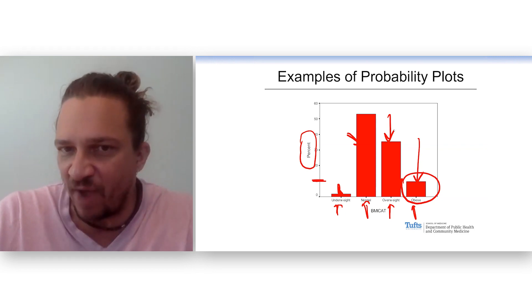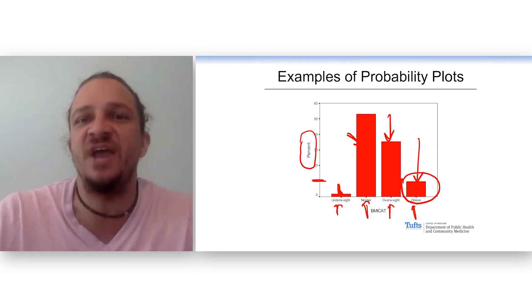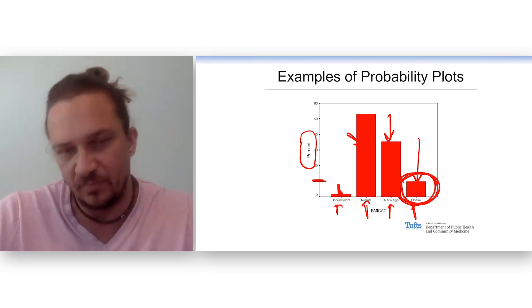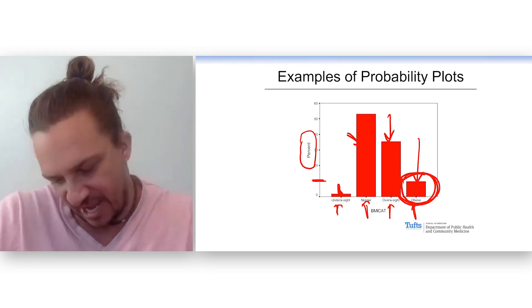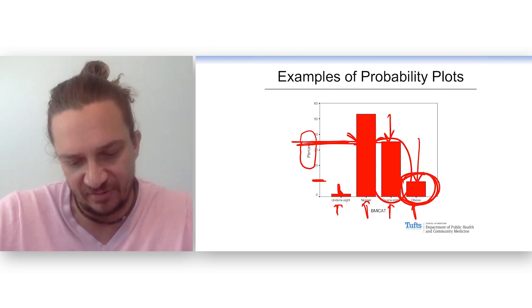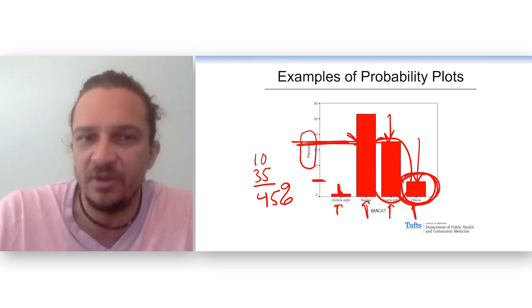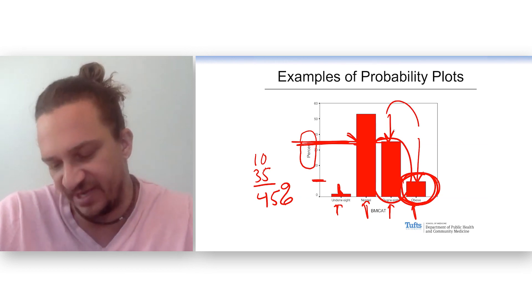What's the chance if I randomly chose an elderly resident of Chinatown that they would be overweight or obese? Well, I got about 10% here and it looks like I got about 35% here. So there's my 10, 35%. There's about a 45% chance I would hit someone, choose someone, randomly select someone who falls into one of these two categories.